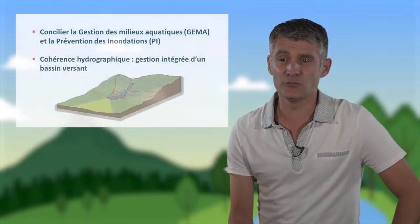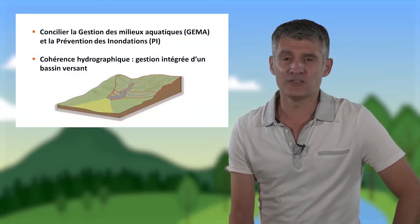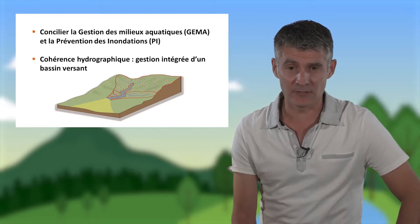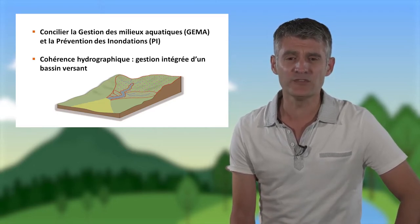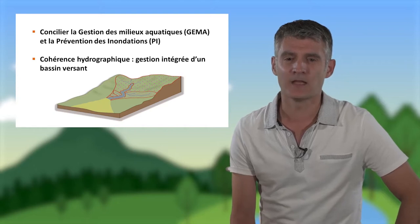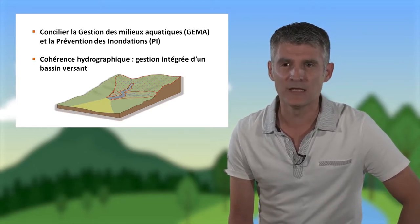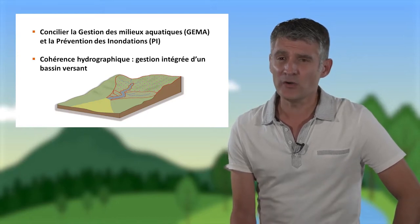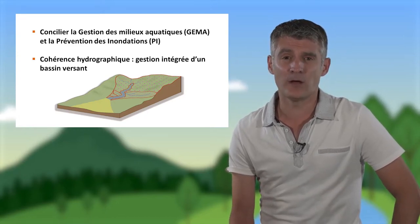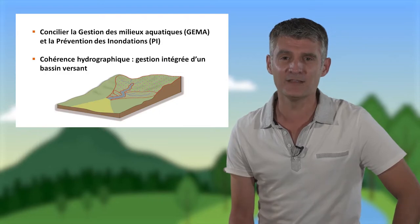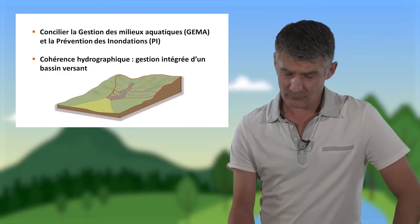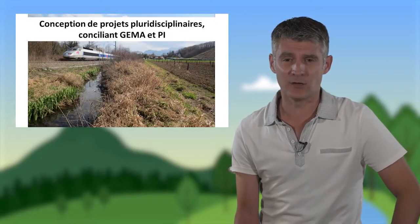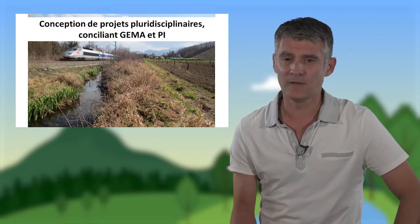Concrètement, le législateur a souhaité confier aux collectivités prenant en charge cette compétence le soin de concilier la gestion des milieux aquatiques — la GEMA — avec la prévention des inondations — la PI — avec la nécessité d'avoir une cohérence hydrographique. Il va falloir penser une gestion intégrée à l'échelle d'un bassin versant, et développer des projets pluridisciplinaires pour concilier la GEMA et la PI.